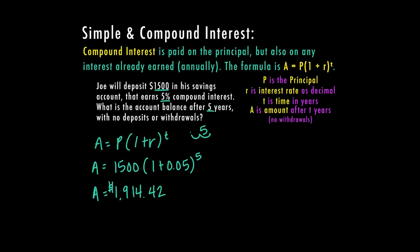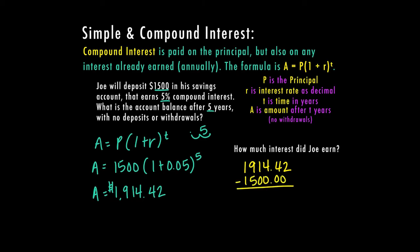This is the total amount that Joe has after five years, whenever he put $1,500 in his savings account. Now if we want to know how much interest Joe earned on this money, we would just take the amount of money he has after five years and subtract the amount of money that he invested. We'll see that the amount he has left is $414.42 — so this is just the interest that he earned.